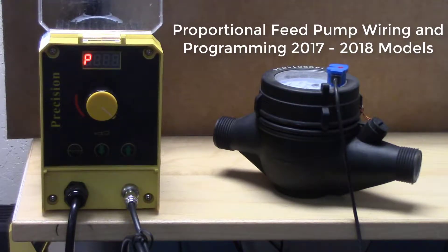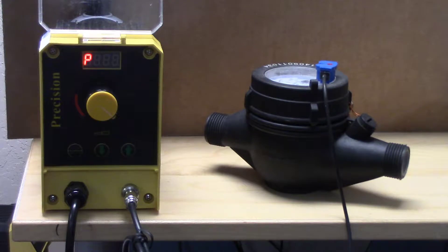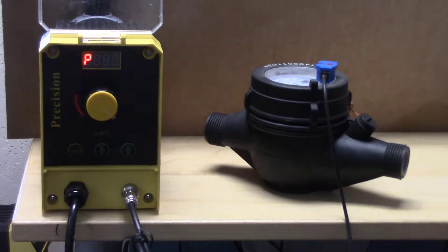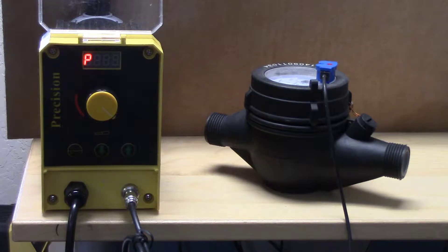Howdy folks, got another P24 instructional video. Today we're going to program and hook the flow sensor, the flow meter, up for a proportional feed system. When you get the pump and plug it into a power outlet—this is a 110 pump going into a 110 cord—the display reads the letter P, which means I've got power applied.